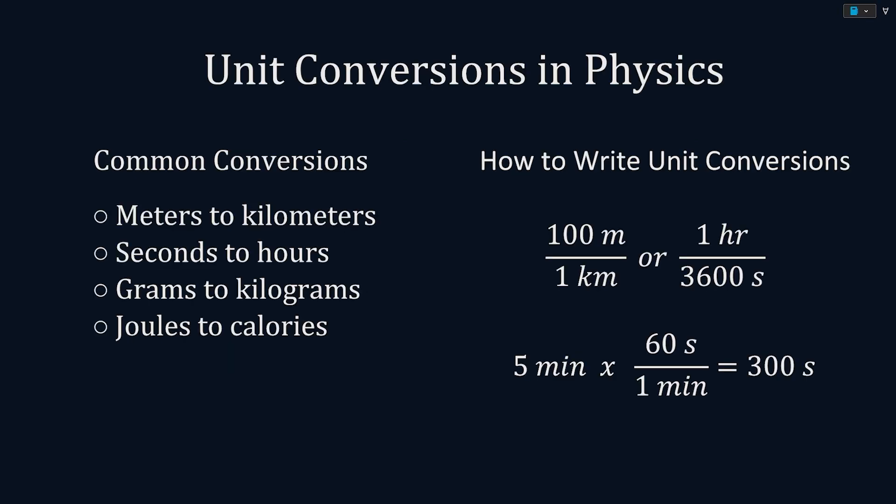In physics, we often switch between metric prefixes, time, distance, mass, and energy units. For example, many common conversions are meters to kilometers, seconds to hours, grams to kilograms, and joules to calories.